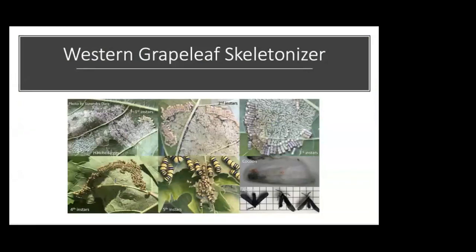Western grape leaf skeletonizer is a really distinctive moth in both the larval and adult forms, so you can actually identify the species from the larval forms. When the larvae emerge, they line up side by side and feed together on the underside of the leaf, eating everything except the leaf veins on the top layer. Later immature stages eat everything but the main veins. These feeding behaviors are distinct and easy to notice in the vineyard. Unlike most moths, western grape leaf skeletonizer adults are active during the day — they are not a nocturnal species.